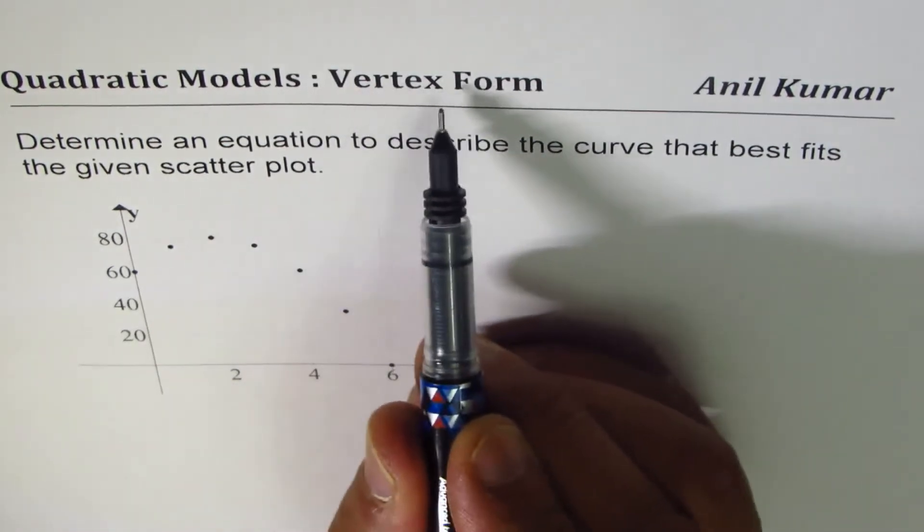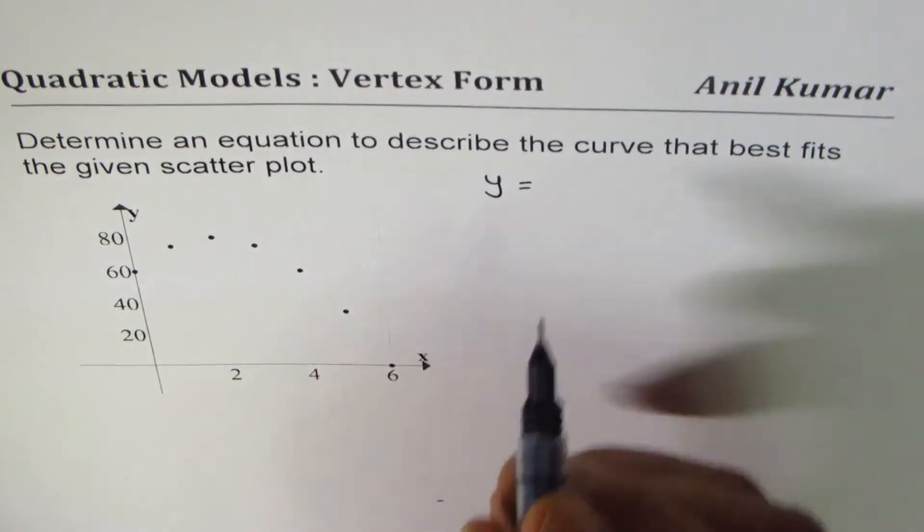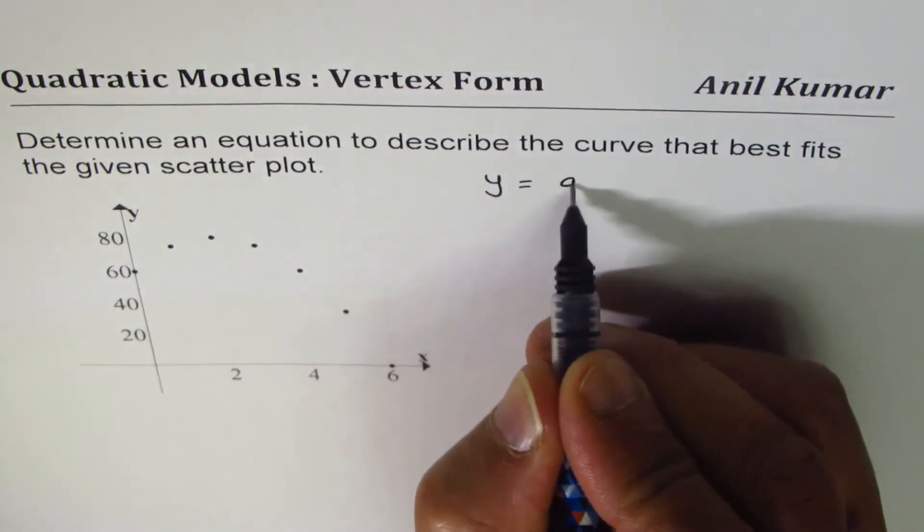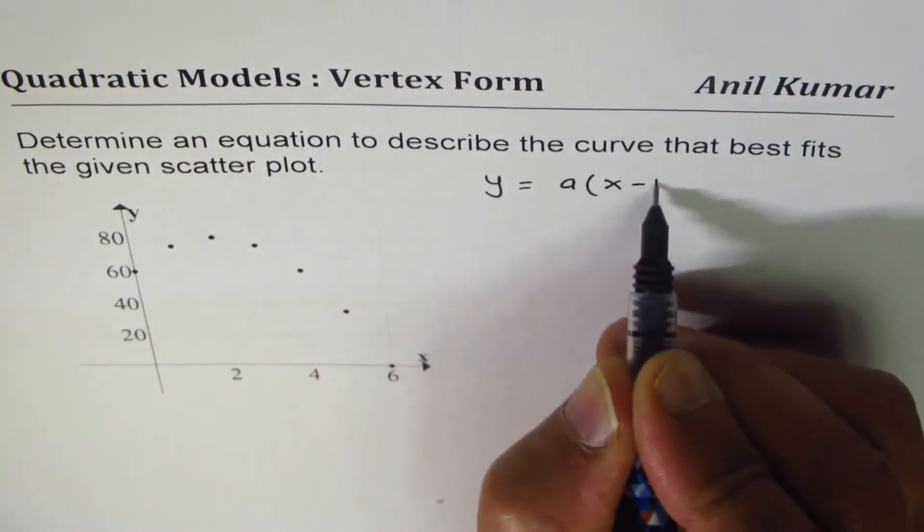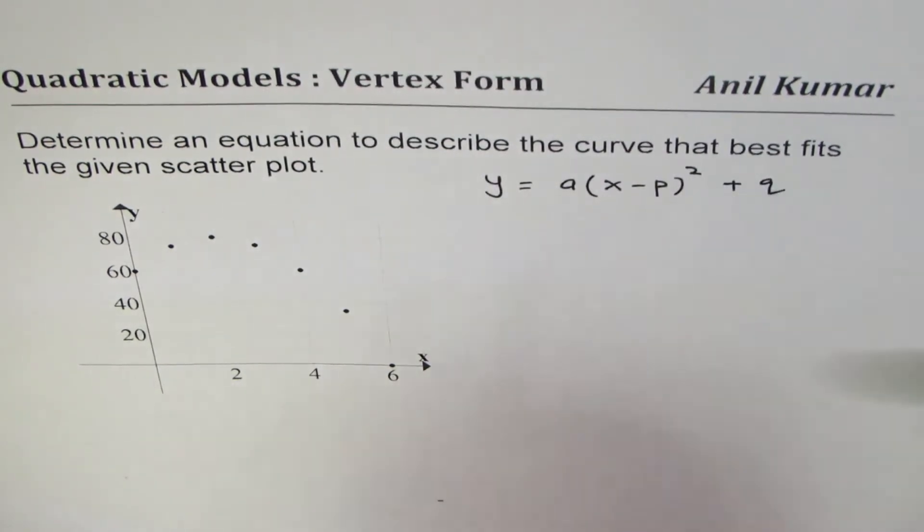Let me first write down what the vertex form is. In vertex form, quadratic equation could be written as y equals to a times (x minus p) whole square plus q, where (p, q) is the vertex.